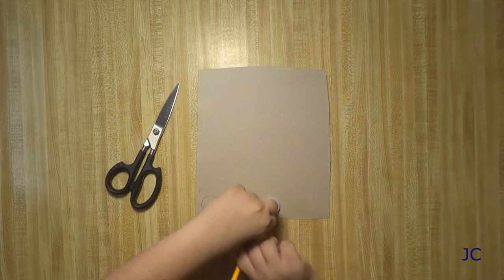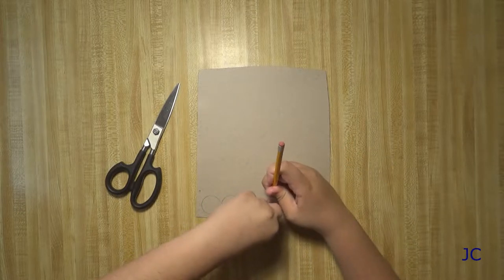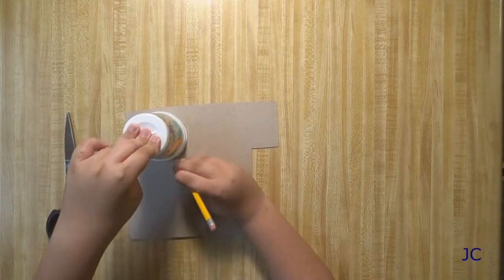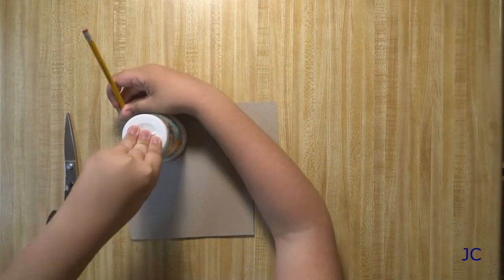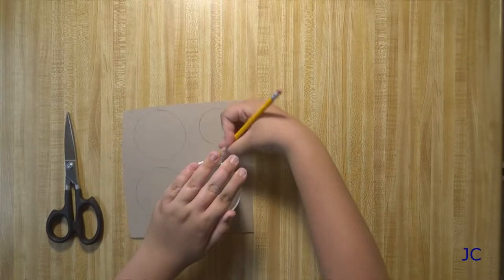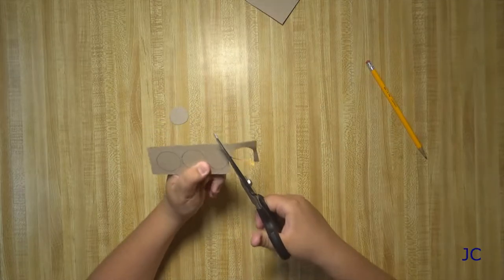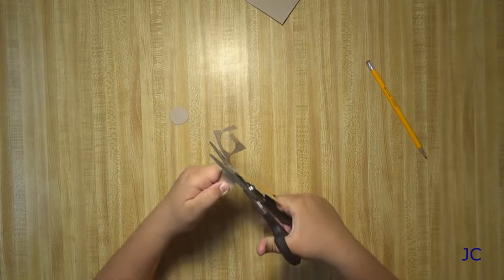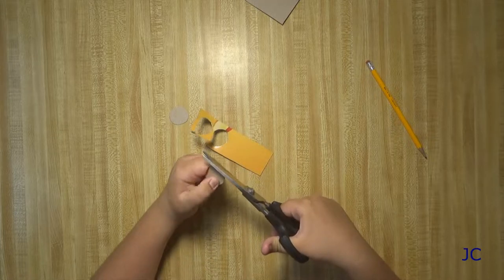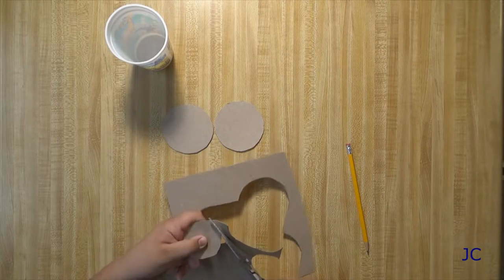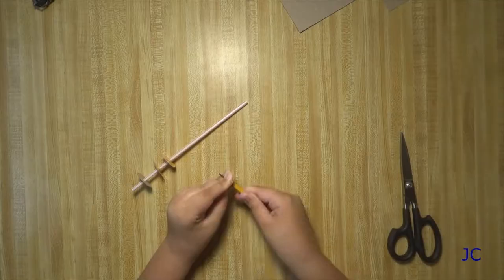We're going to start off this project by cutting circles from cardboard. We're using thin cardboard from a cereal box and thicker cardboard just from a cardboard box. So you're going to start off with the thin cardboard and you're going to cut out six circles that are about an inch and a quarter in diameter. You're going to cut out two more that are two and a half inches and then two more that are three and a quarter inches. Then with the thicker cardboard you're going to cut three circles that are two and a half inches in diameter and eight circles that are three inches in diameter.